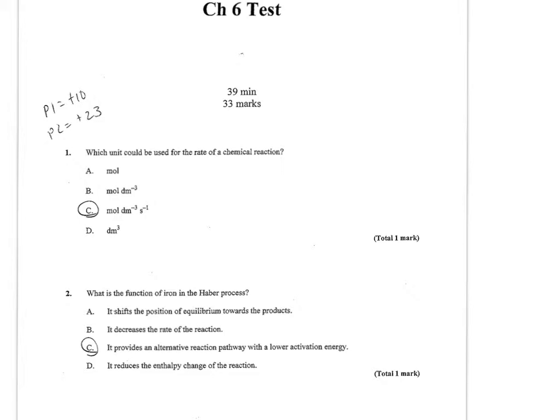Shifts to equilibrium? No, doesn't affect it. Decreases rate? No, that's the opposite of what we want. Provides an alternative reaction pathway with lower activation energy? That's exactly what we want. Reduces the enthalpy change? No, has no effect on enthalpy change. So C would be the correct choice.